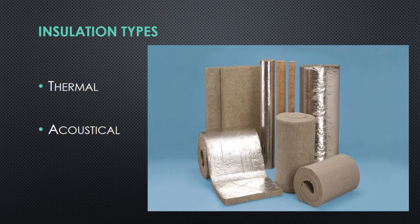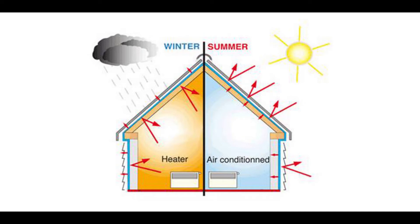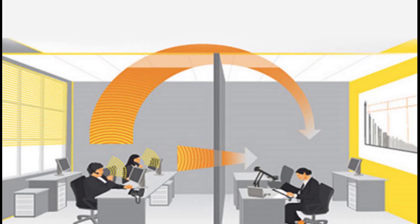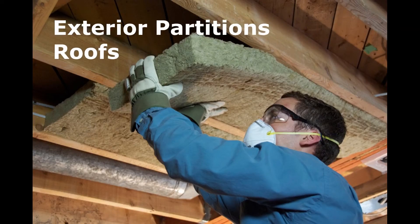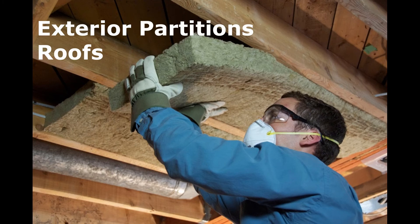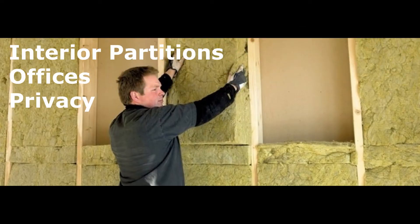Coming back to insulation, there are basically two types: thermal and acoustic. Thermal insulation, as the name suggests, restricts the flow of heat between two spaces, while acoustic insulation restricts the flow of sound between two surfaces. Thermal insulation is used in exterior partition systems exposed to weather on the exterior side, while acoustic insulation is commonly used in interior partition systems of offices where quiet environments and privacy are required.